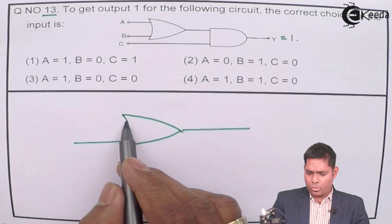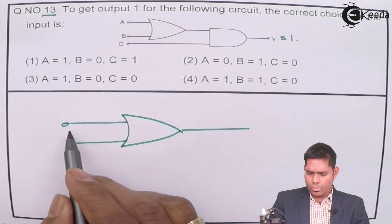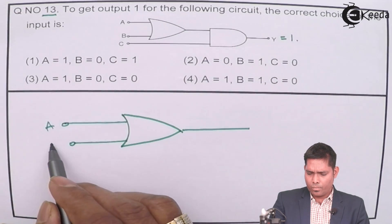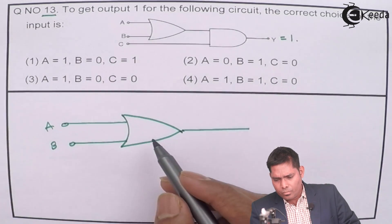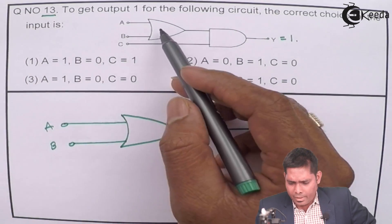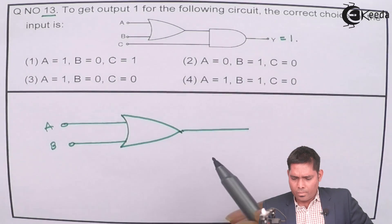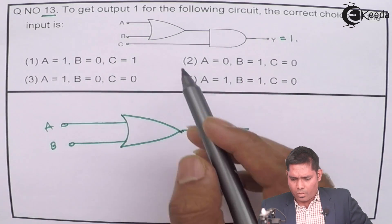Here I have got two inputs, A and B. There's an OR gate and an AND gate.